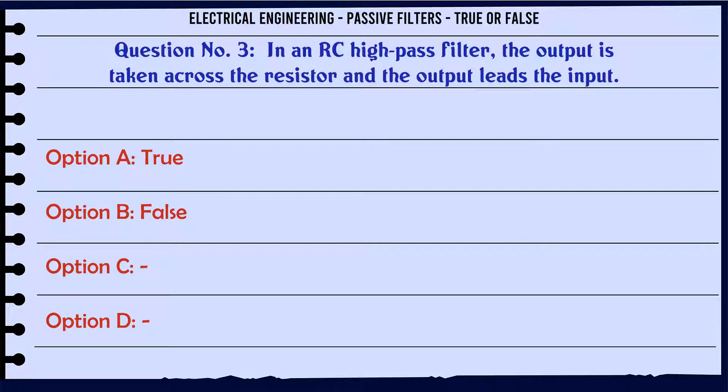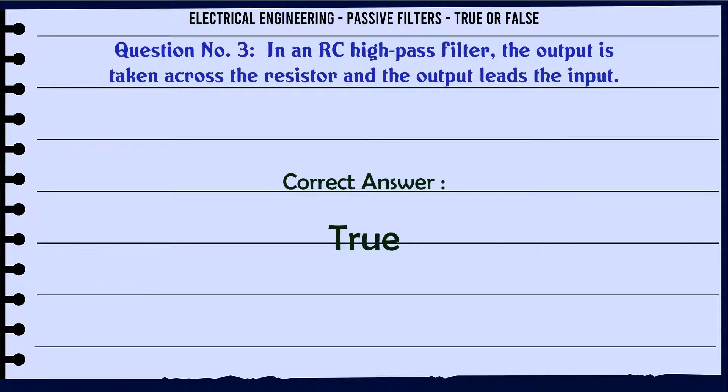In an RC high-pass filter, the output is taken across the resistor and the output leads the input. A. True. B. False. The correct answer is: True.